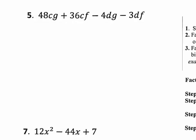Step one on factoring by grouping is to simply make space between your first group and your second group. So you have your 48CG plus 36CF, leave some space, minus 4DG minus 3DF.